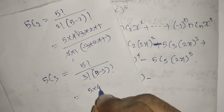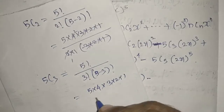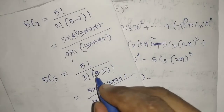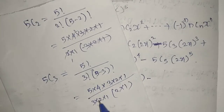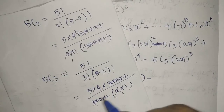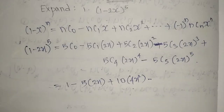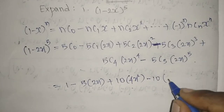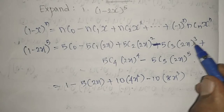For 5C3: 5×4×3×2×1 divided by (3×2×1)×(2×1). The 3×2×1 cancels, leaving 5×4 divided by 2, giving 10. So 5C3 is also 10. Then (2x)^3 equals 8x^3, giving minus 10×8x^3 = minus 80x^3.